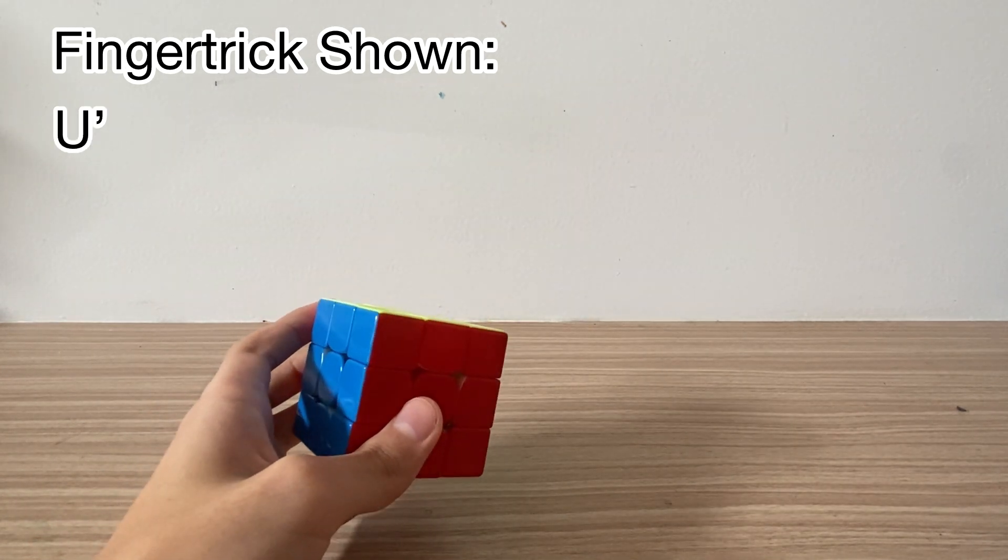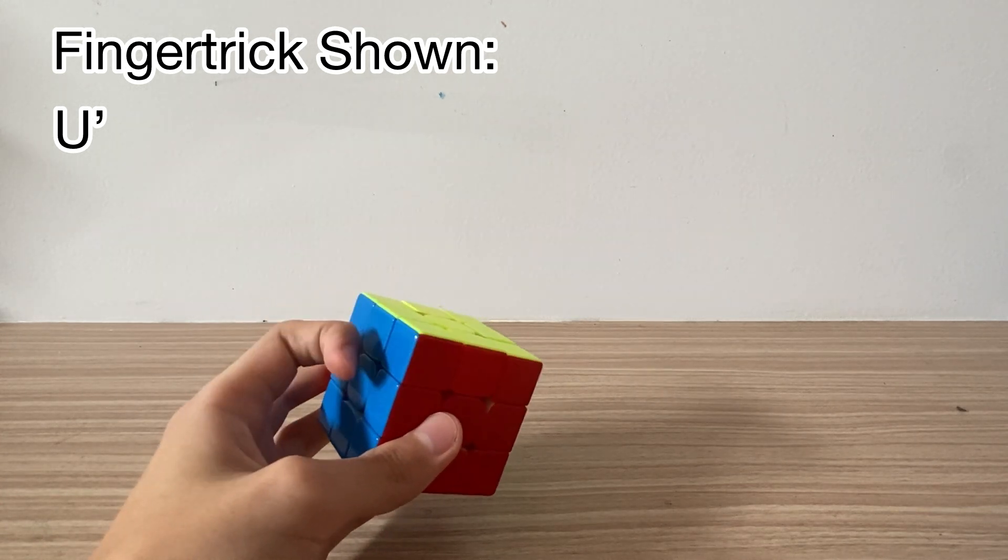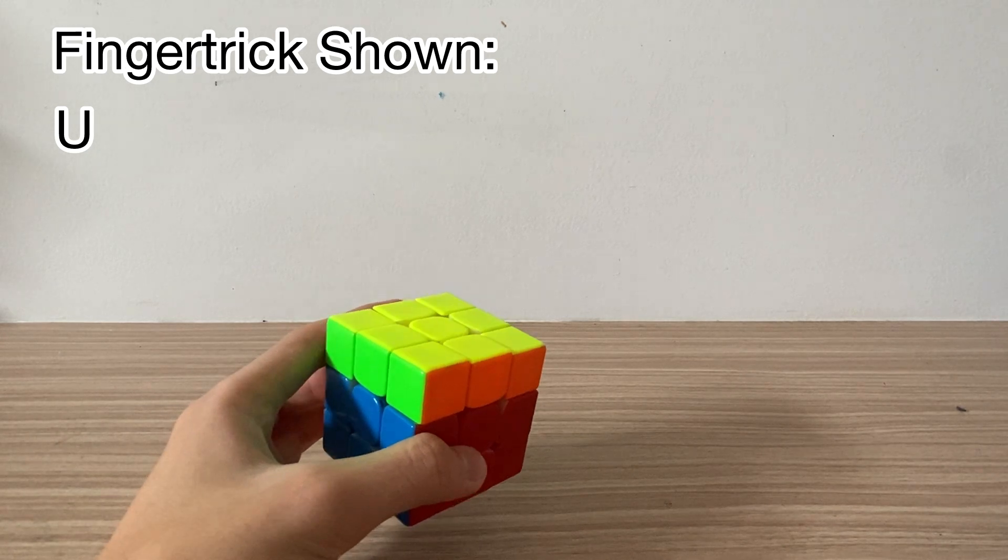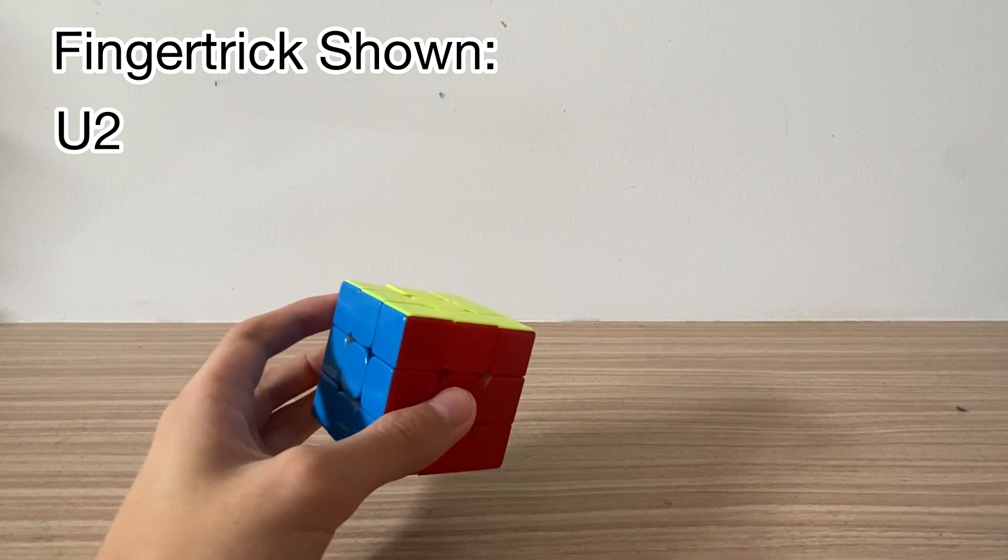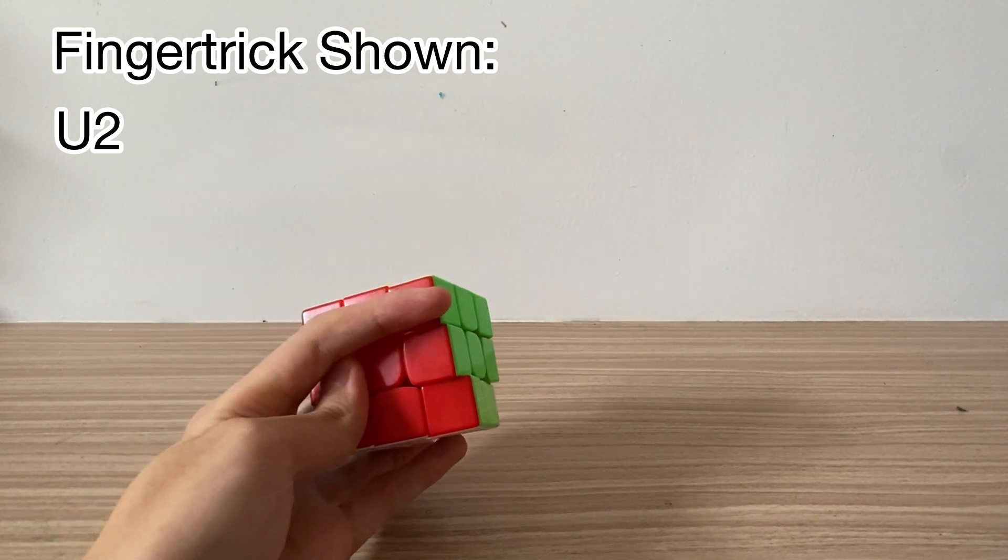And for U prime you do this with your left index, which is very obvious. And for U, you pull the other way. Or you can also do this. For U2, you can do a double flick, or as many people prefer, the idle U2. Like that. So you do this, and then push more.